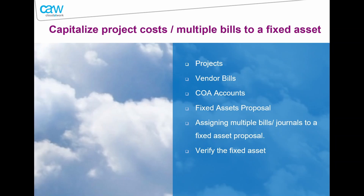Once you've added all the other proposals and tied them to the main proposal, click Generate Asset. NetSuite will take your main asset proposal, attach all the other asset proposals and their associated costs, and create a single fixed asset with the total of all these costs. Then go to the fixed asset itself, give it the correct name, ensure the depreciation start date and end date are correct, verify the costs and lifetime are accurate, and save it — it will then be ready to be depreciated in the months to come.